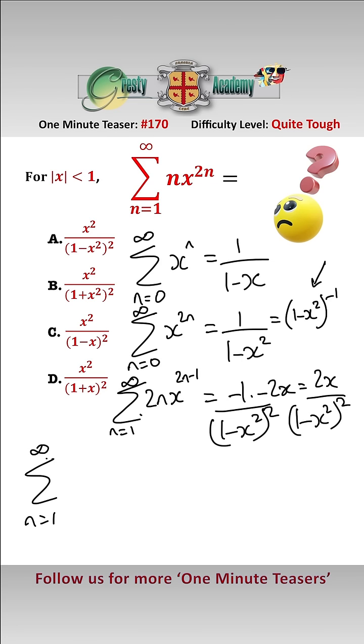and that gives us the sum between infinity and n equals 1 of nx to the 2n equals x squared over 1 minus x squared squared, which is answer a.